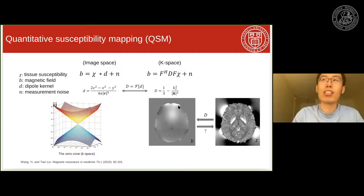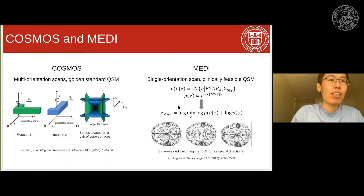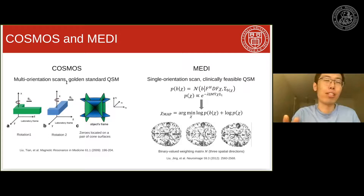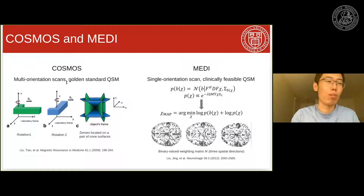There are some prior works in our lab that solve this dipole inversion inverse problem in QSM. The first approach is called COSMOS. Since we know there is a zero cone in K-space of the dipole kernel, we try to eliminate such zero cone by using multiple orientation scans. If we rotate the main magnetic field B0 by a certain angle — for example, scanning three times using three different main magnetic field directions — we can cancel out this zero cone. This makes the ill-posed inverse problem in QSM well-posed. This is called COSMOS.